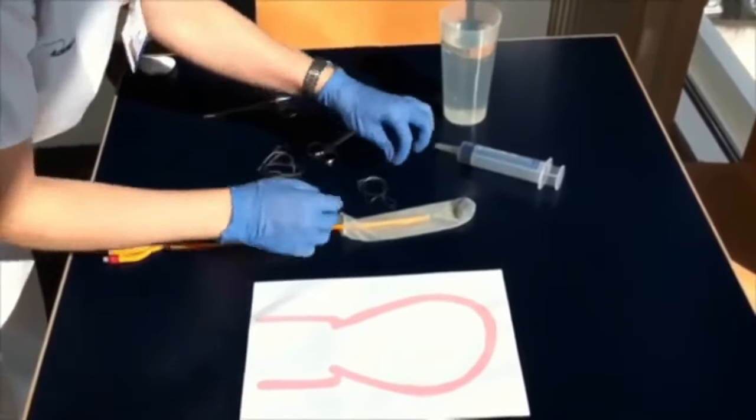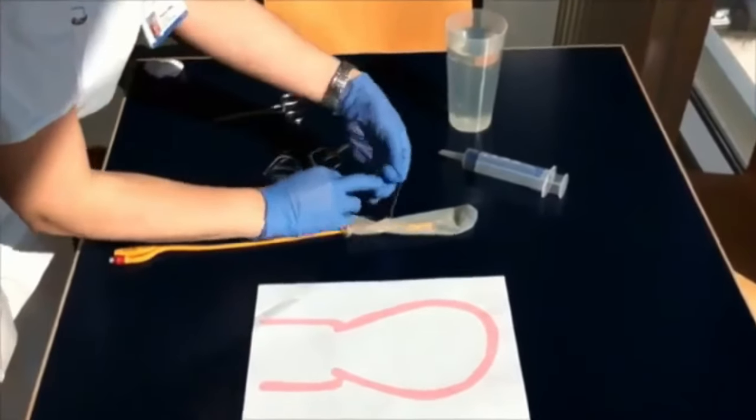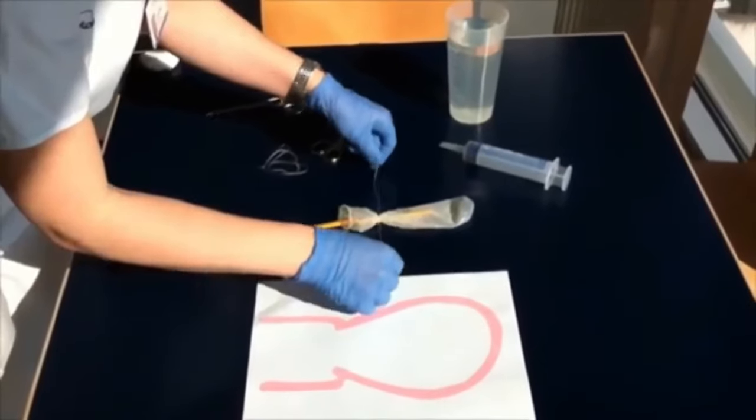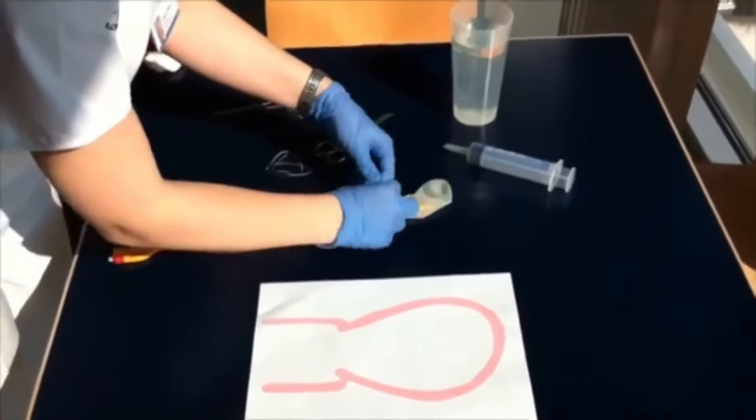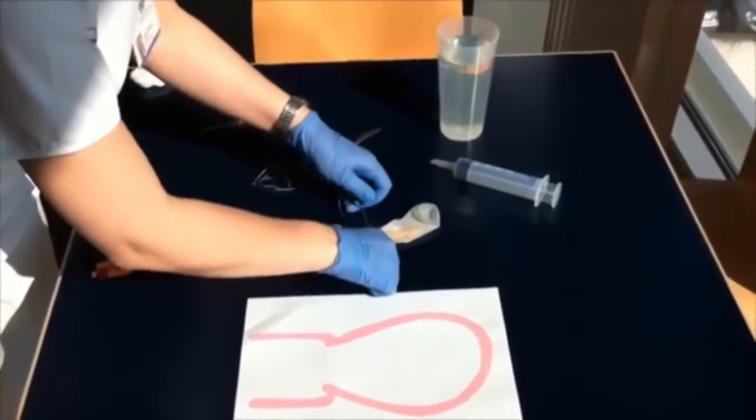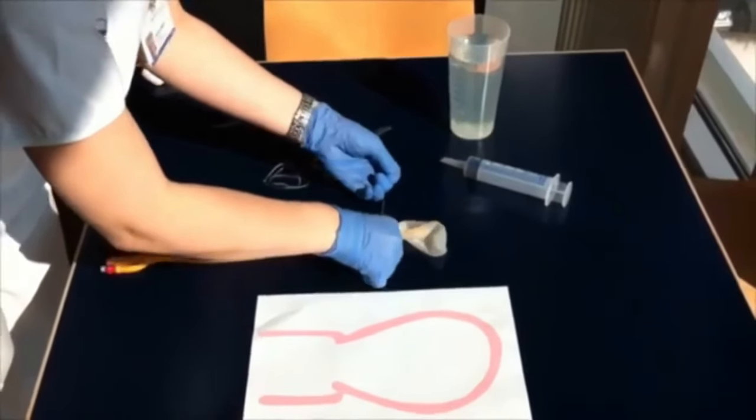Now you can see in the video that a Foley's catheter has been inserted into the condom. You should leave a little bit—one centimeter space—above the Foley's catheter, and then you should tie at the lower end, not very tightly, not very loosely, just adequately enough.